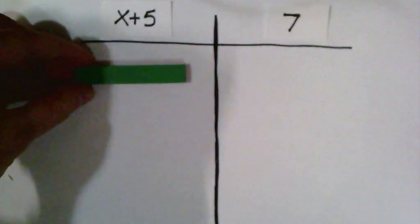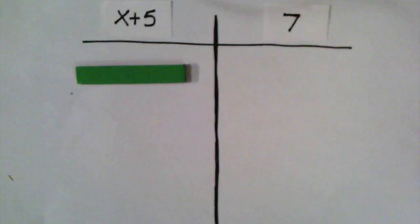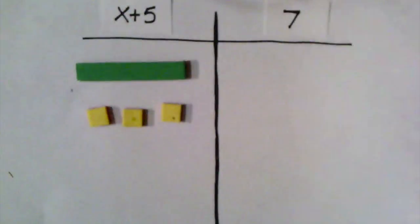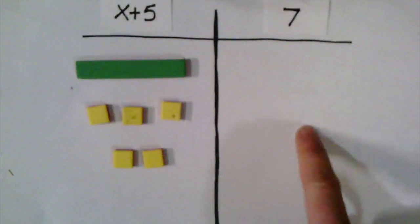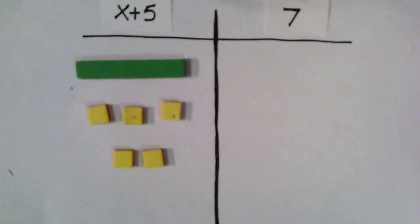So again, we're going to use this long green bar to represent our x. And then we're going to use 5 yellow tiles to represent the plus 5. On the right side of our equation we have 7, so we need 7 yellow tiles to represent that.